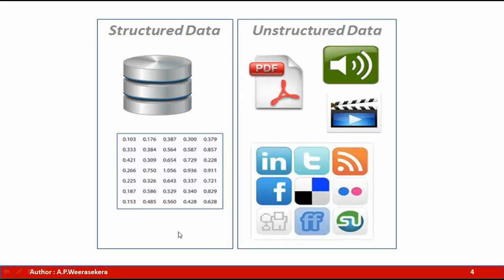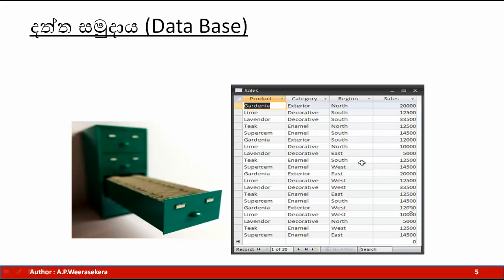We can use the structure data. We have the structure data — do not know the details. What is the important thing to do? The details are posted by the other side. We don't know if the details are on the screen. The details are on the screen.